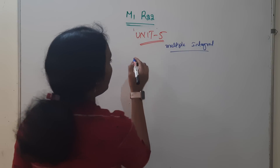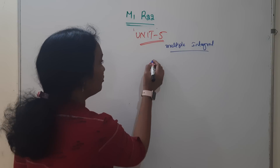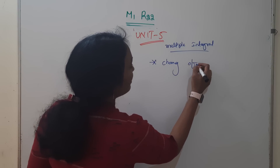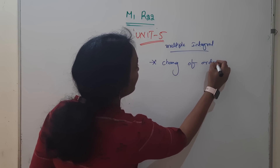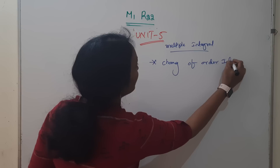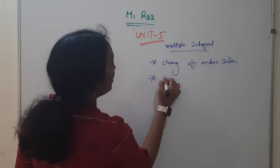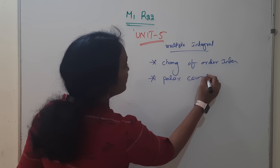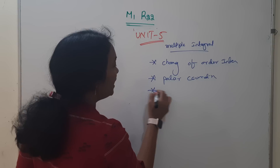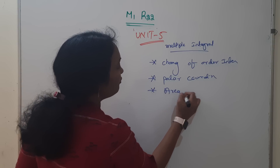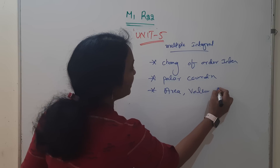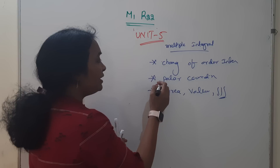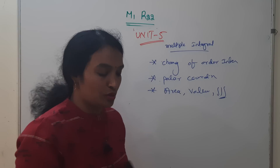Here we have three questions. This is the last minute — Change of Order of Integral. The first thing is polar coordinates — one problem. Change of order, area and value, triple integral. I am talking about triple integral — a short question.